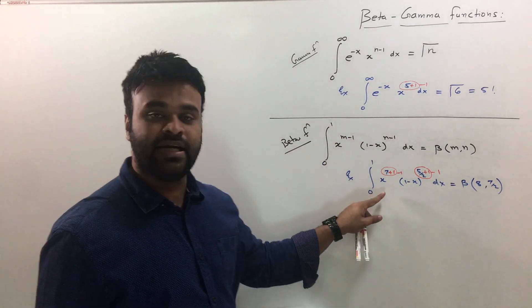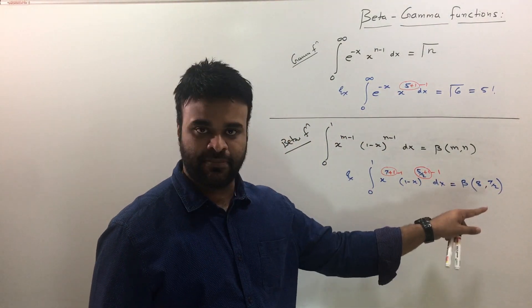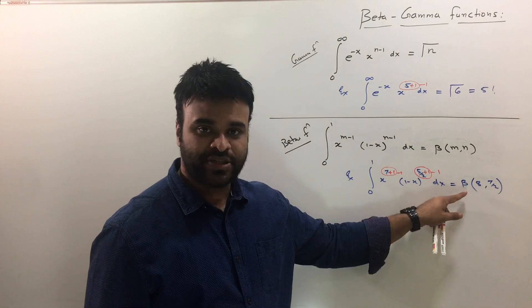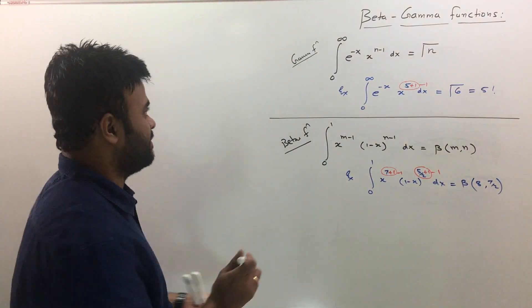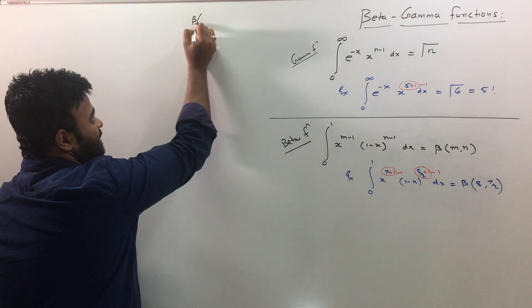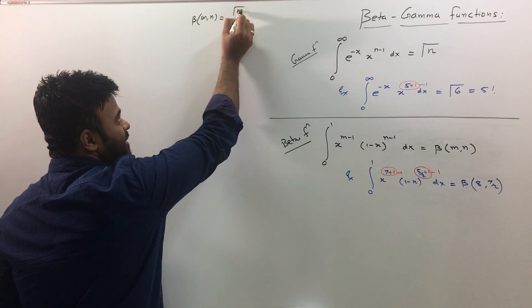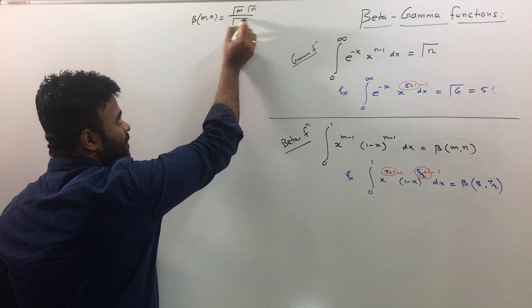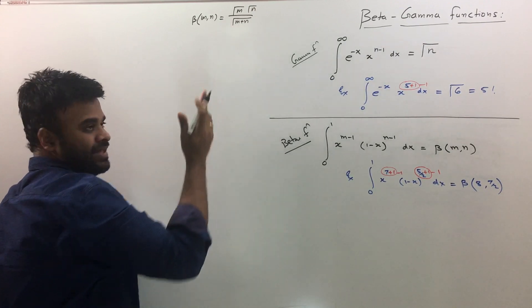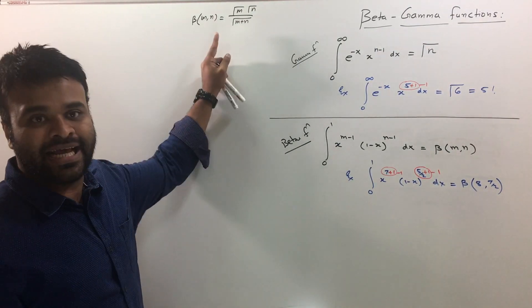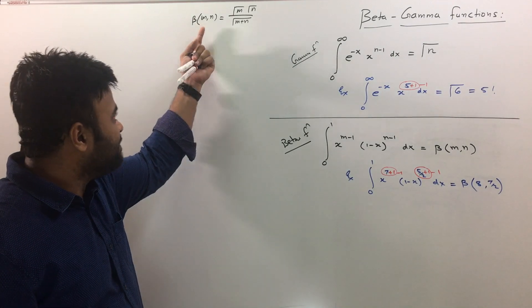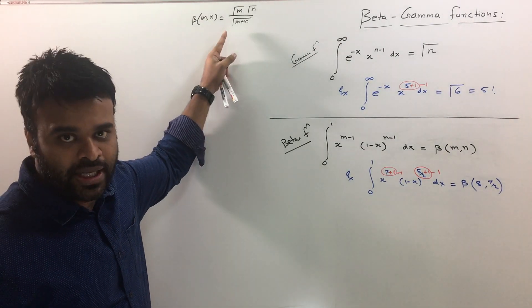So you are going to get m minus 1 and n minus 1 and this will be, the value here is going to be beta 8 and this is 7 by 2. So now you have value of this integral as beta 8 comma 7 by 2. Well how do we solve beta? That's very simple. This is beta mn, you can write beta mn as gamma m, gamma n upon gamma m plus n. That's just the relation between beta and gamma and you can see you can write beta in terms of gamma as well.